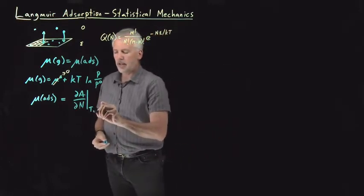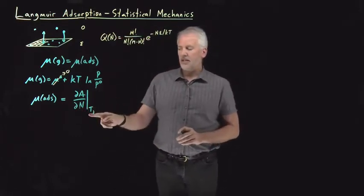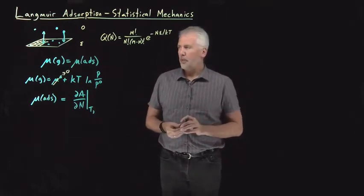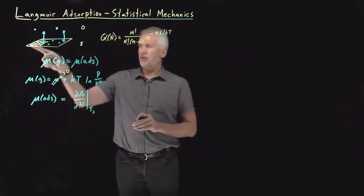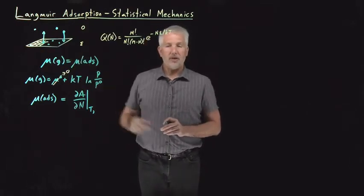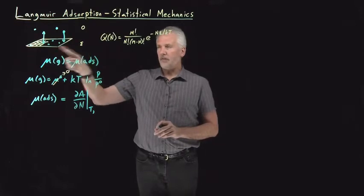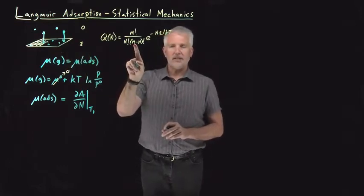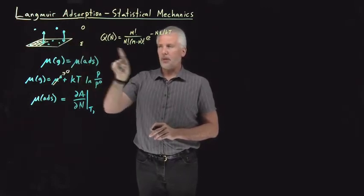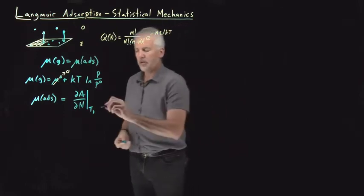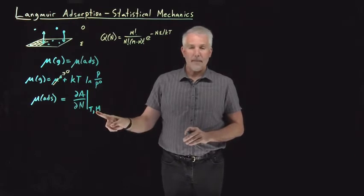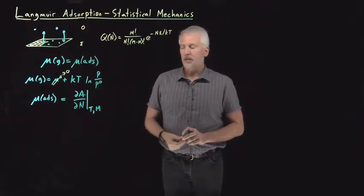Normally we would say dA/dN at constant temperature and volume for a three-dimensional system, but the system we're talking about is molecules stuck to a two-dimensional surface. The two-dimensional surface doesn't have a volume, it has an area, and we characterize the area by the total number of sites M. So we want to do this derivative at constant T and constant M — this is the equivalent of volume for the system we're talking about.